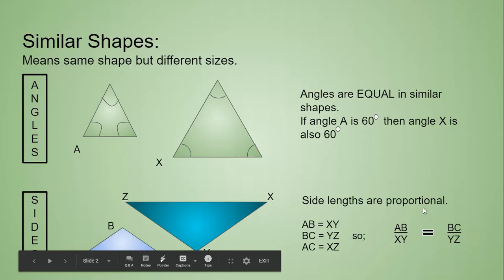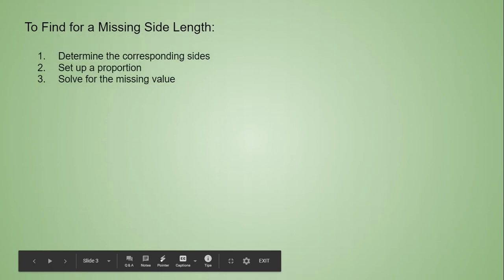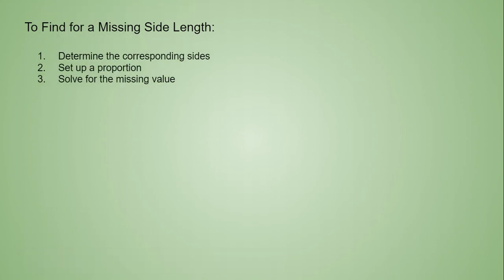And in our examples, we'll fill this in with numbers. So it'll make a little more sense with numbers instead of letters. All right. So to find a missing side length, you want to determine the corresponding sides, set up a proportion, and then solve for the missing value. For this example, we have triangle ABC is similar to triangle XYZ.